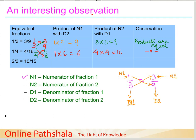Let us try a third example. We have 2 by 3 equals 10 by 15. Again we multiply 2 with 15 and 3 with 10. So 2 multiplied by 15 gives us 30, and 3 multiplied by 10 again gives us 30. Again these products are equal.